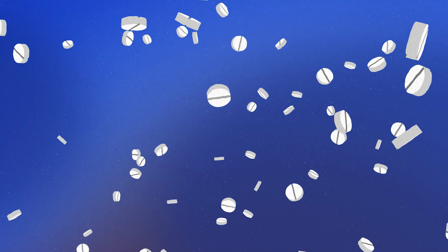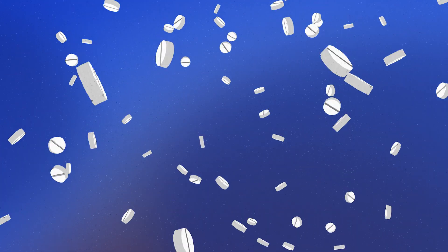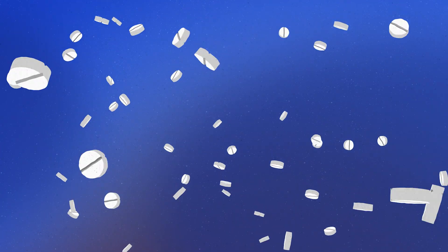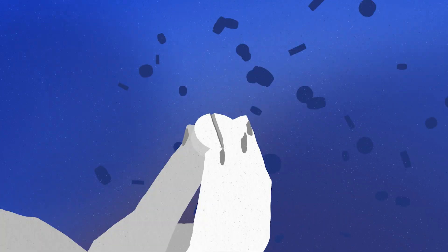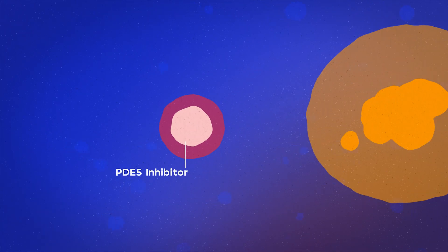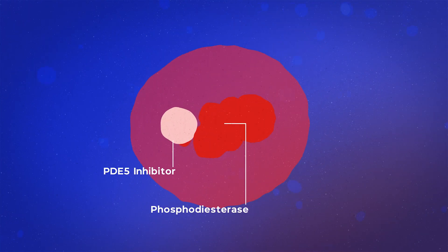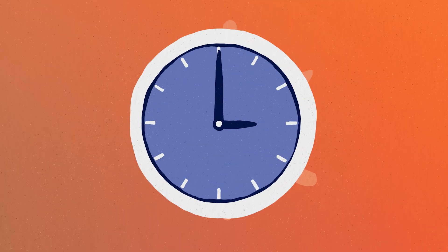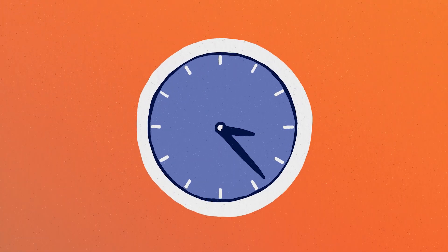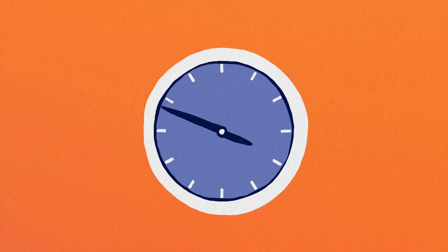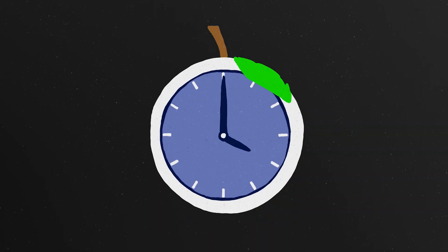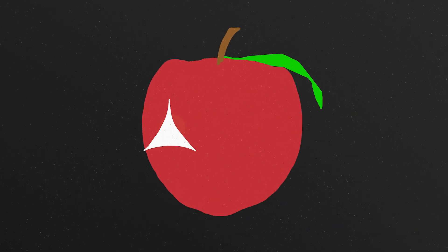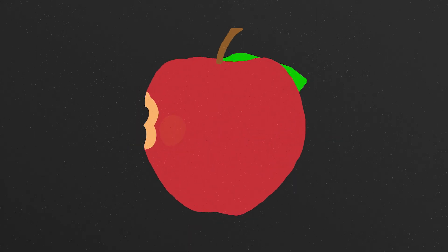Oral PDE5 inhibitor tablets are a proven, effective and regulatory cleared treatment for erectile dysfunction. They work by inhibiting the enzyme PDE5, phosphodiesterase type 5, which helps to increase blood flow and facilitate an erection. Because they are taken orally, they are metabolized by the liver and take up to one hour to work. Efficacy can also be hindered by consumption of food and alcohol.